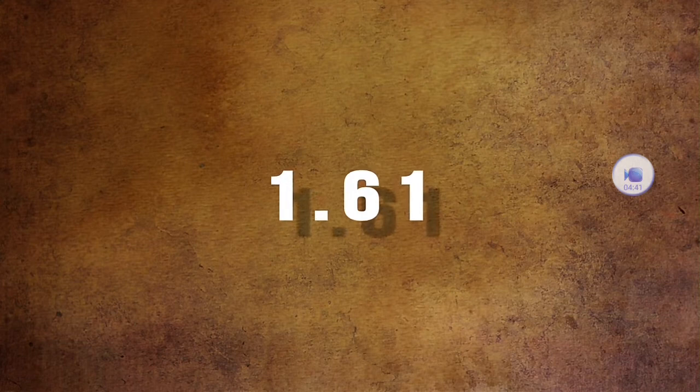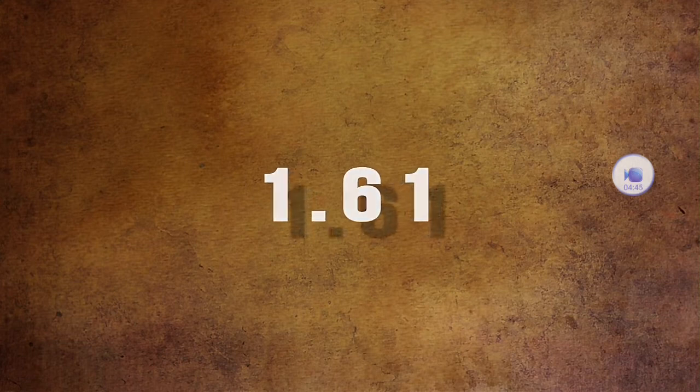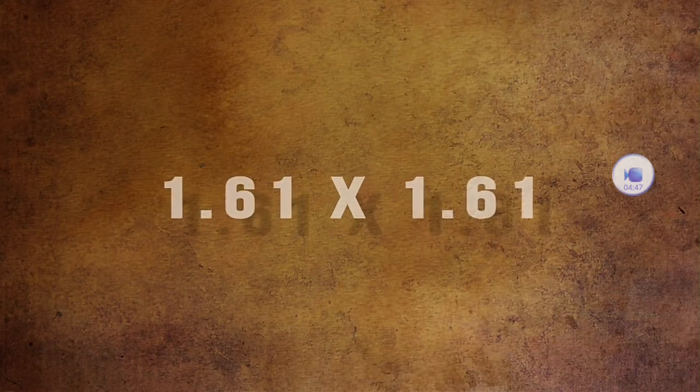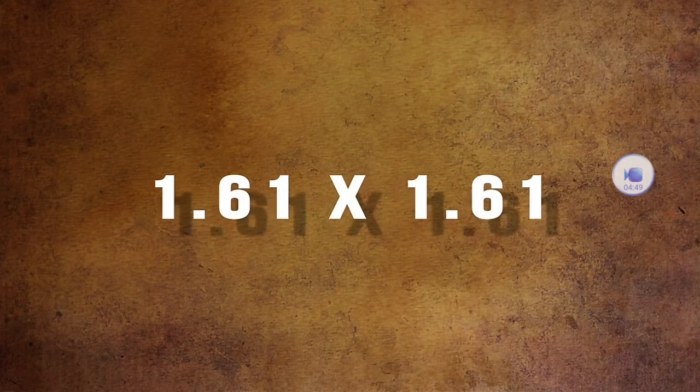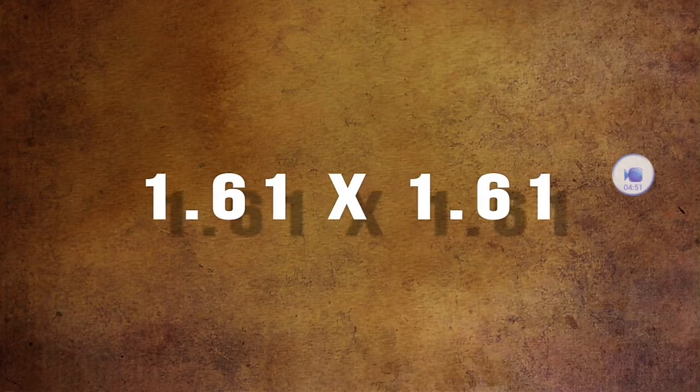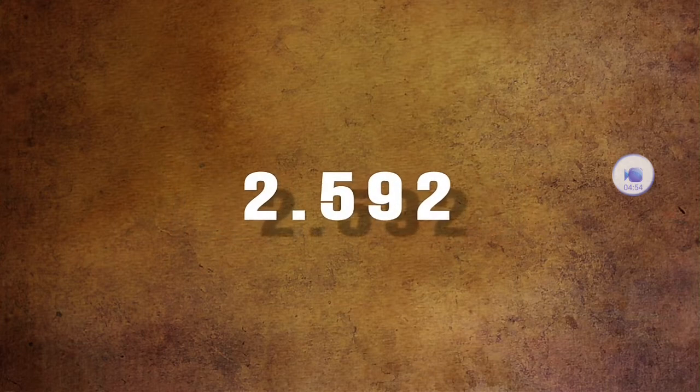This turns out to be a cosmically significant number in our search for coincidence and synchronicity, for watch what happens when we square 1.61, carried out to the nearest thousandth. The answer? 2.592. The same exact number sequence as the precession of the equinox.